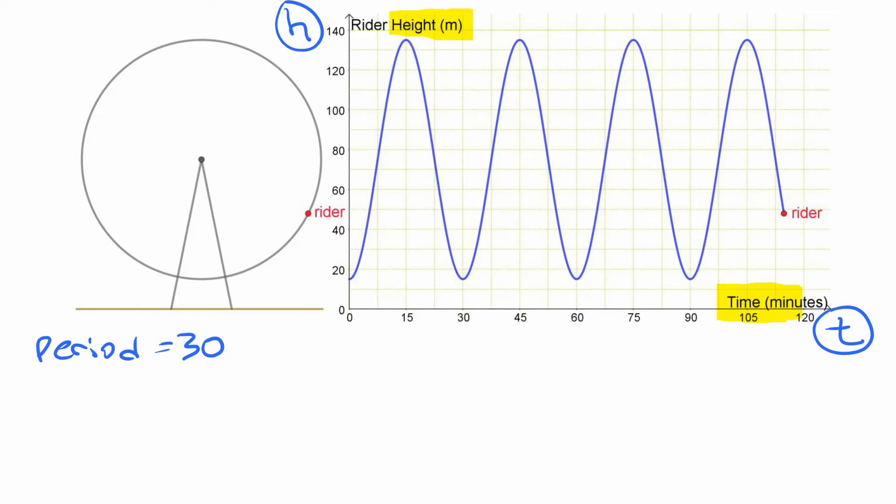Now our amplitude is the distance from the center up to the top or the center to the bottom. Now that's just the radius of the wheel. Center to top or center to bottom is the radius of the wheel. We know the diameter of the wheel is 120. So our amplitude is half of that or 60.